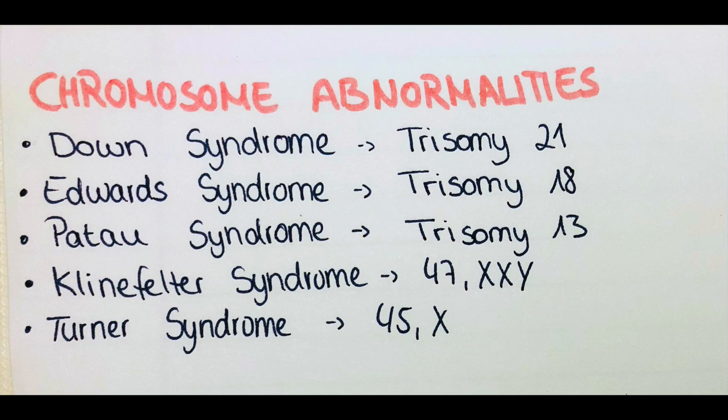Down syndrome is also known as trisomy 21, because there is an additional copy of the 21st chromosome, making it three copies. Typical for trisomy 21 is a hallmark appearance with a small head, short neck, flat face, a protruding tongue which seems like it might be too big for the person's oral cavity, and wide hands with short fingers.